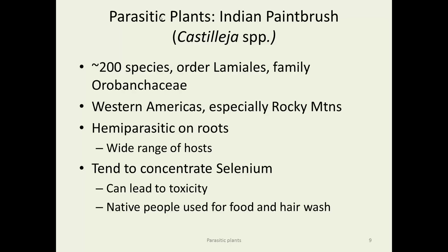Indian paintbrush, Castileja, is a beautiful species with many different species — over 200 in the order Lamiales, family Orobanchaceae. Very common in the Rocky Mountains, from Alaska down into South America. These are hemiparasites with some photosynthetic ability and a wide range of hosts. Since they are root parasites, it's hard to know what they're parasitizing without digging everything up. Interestingly, they tend to concentrate selenium, which in the poorly developed soils of the Rockies can reach high concentrations and lead to toxicity. However, native people did eat the flowers like a salad and even made a hair wash to make their hair glossy, which modern researchers think was due to the selenium in the leaves.